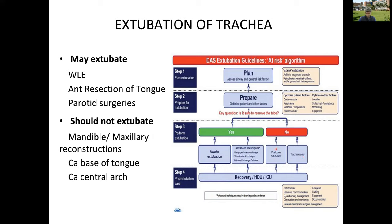In our setup, we generally use a delayed extubation strategy — extubating the next day, after 24 hours. Once there is significant edema or large dissection, we many times extubate over an airway exchange catheter. For large central patients, upfront tracheostomy is done because of extensive dissection. The technique depends on the surgery, experience, and available equipment. Extubation is kind of an elective procedure and should not be hurried — plan it properly. This is an important question for exams as a short note, long question, or part of a long question.